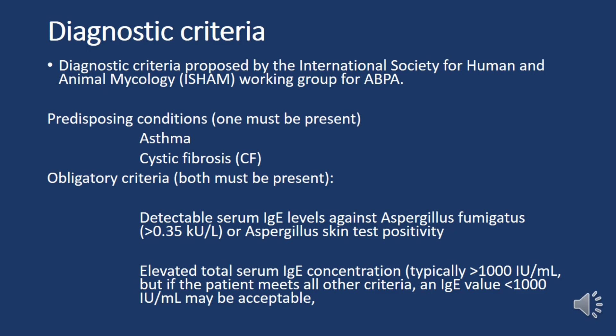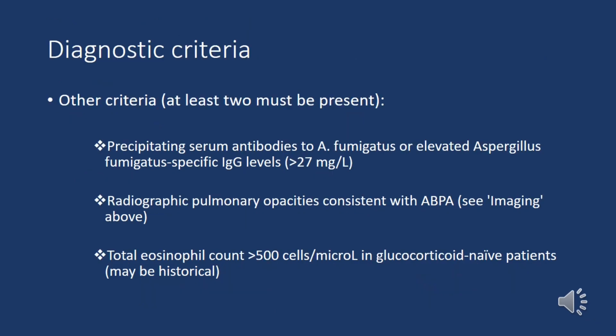The diagnostic criteria of ABPA, as proposed by the International Society for Human and Animal Mycology working group, require certain predisposing conditions — asthma or cystic fibrosis — plus two obligatory criteria: firstly, detectable serum IgE against Aspergillus fumigatus or positive aspergillus skin test; and secondly, elevated total serum IgE concentration, typically above 1000 IU/mL, though a lower value may be acceptable if all other criteria are met.